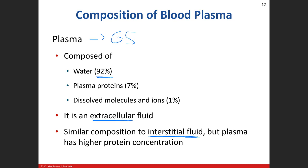The important thing you need to know: blood plasma has a higher concentration of protein. Think of protein as a magnet for water. With osmosis, water moves to an area of higher solute concentration, and our proteins are part of those solutes. So our blood plasma has a higher protein concentration, meaning water is going to want to move from the tissues into our blood vessels.